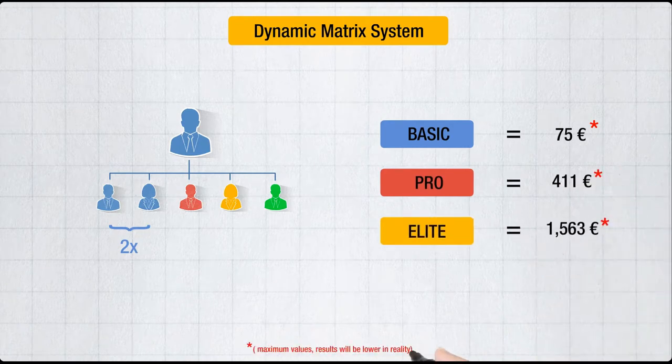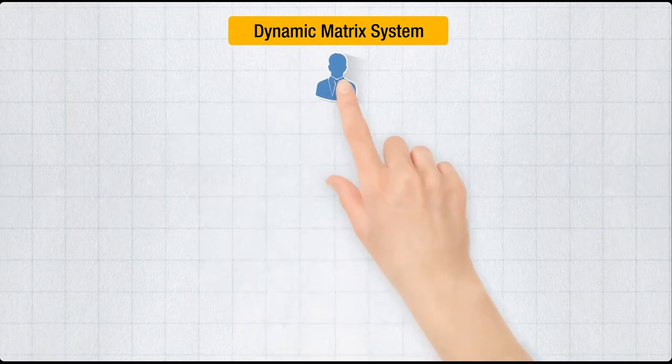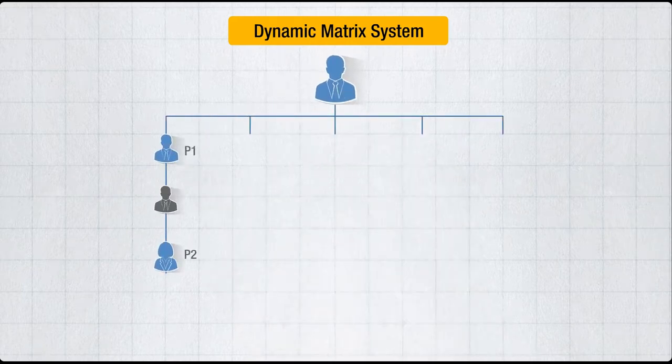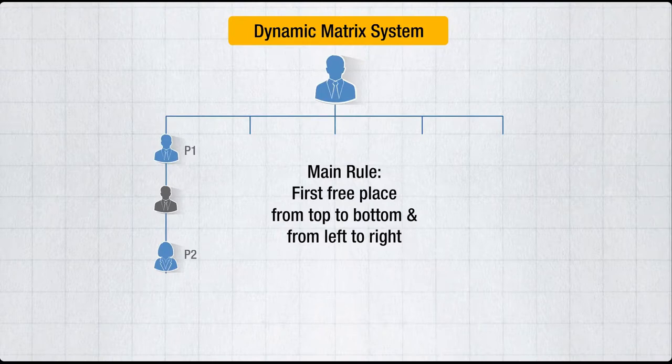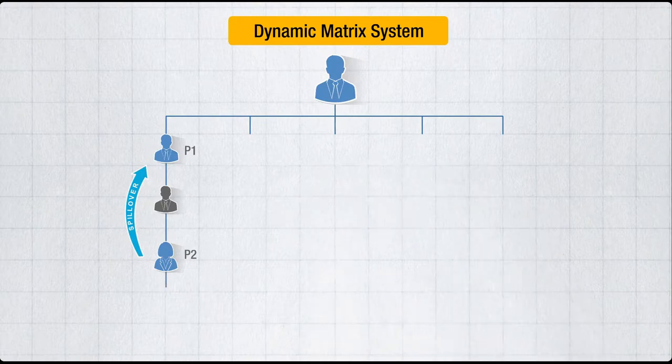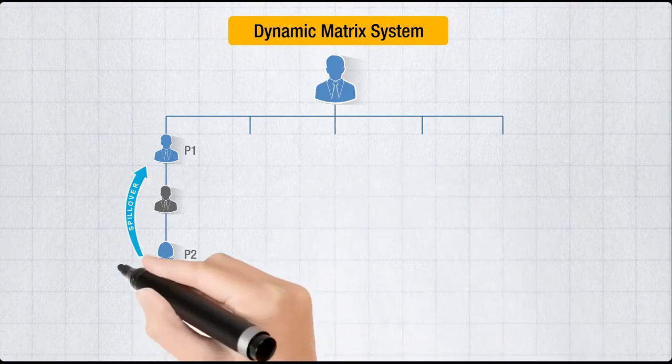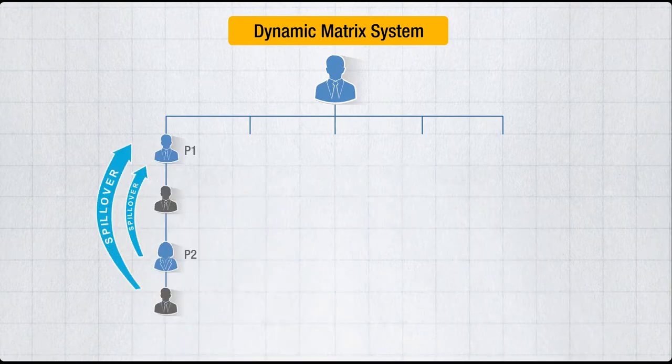Cool, you're earning without telling anyone anything. What happens when you tell others? Person one you refer goes into your first leg, and person two into your first leg in the downline of person one. So person one just got spillover. When person two refers others, it's spillover for person one, and when that person refers others, it's spillover again and again.